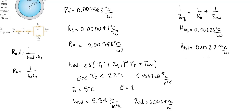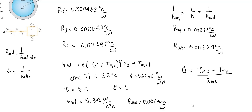Using the total resistance, we solve for the heat transfer rate: Q̇ = (T_∞2 − T_∞1) / R_total. Substituting the known temperatures and the resistance we just calculated, we find Q̇ = 8,029 W.